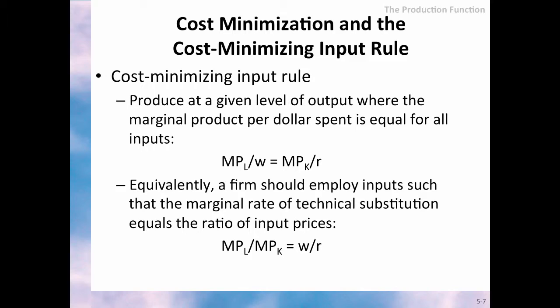The reason we are looking at production and productivity is because, in the end, managers want to minimize cost, and they need this information to do so. A very important rule in order to minimize cost is to produce at a given level of output where the marginal product per dollar spent is equal for all inputs. Equivalently, a firm should employ inputs such that the marginal rate of technical substitution equals the ratio of input prices.